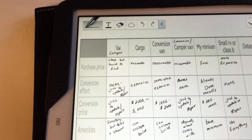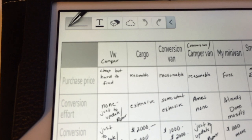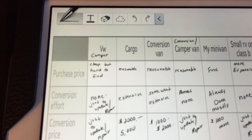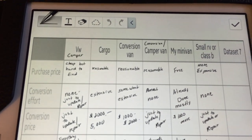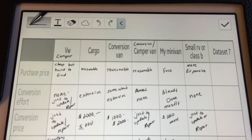Cargo is reasonable. Conversion van, reasonable price. Minivan, free. Small RV, class B, more expensive.